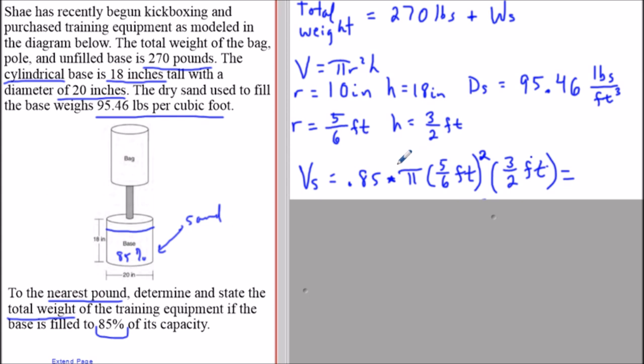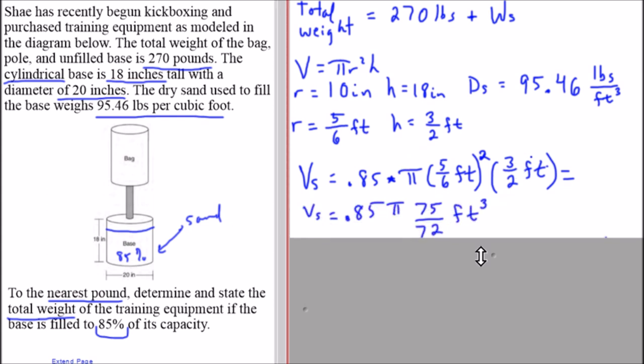When we simplify this, the volume of sand is going to be 0.85 pi times 75 over 72, which is the result of doing 5 over 6 times 5 over 6 times 3 over 2, and then we have cubic feet.